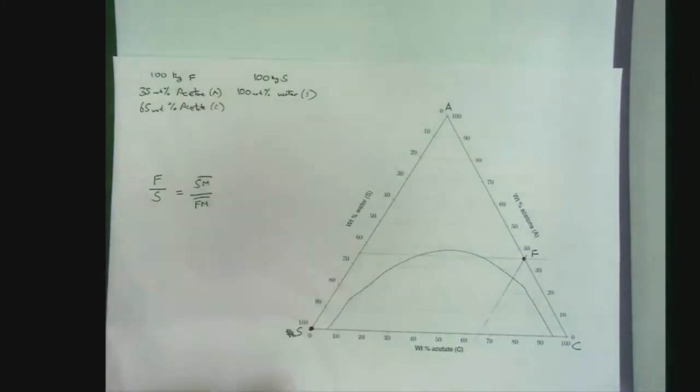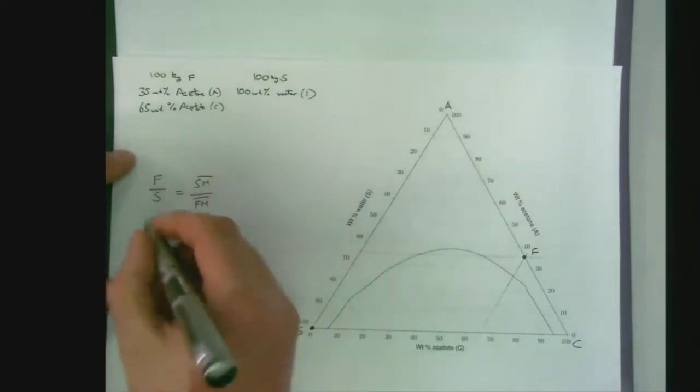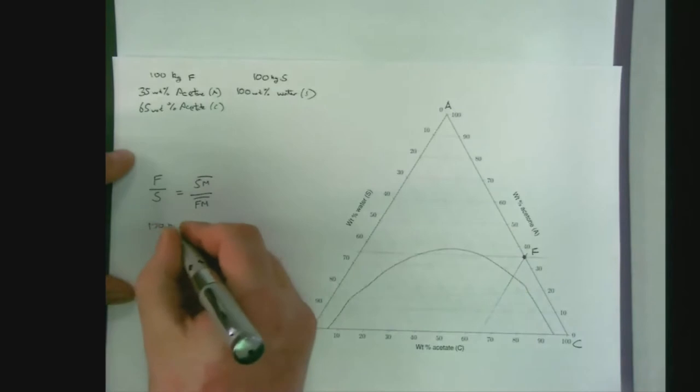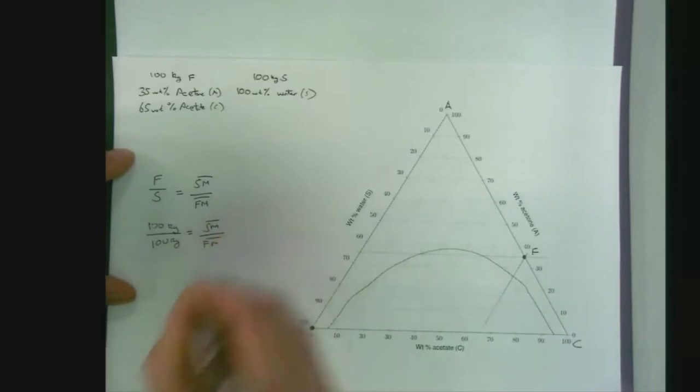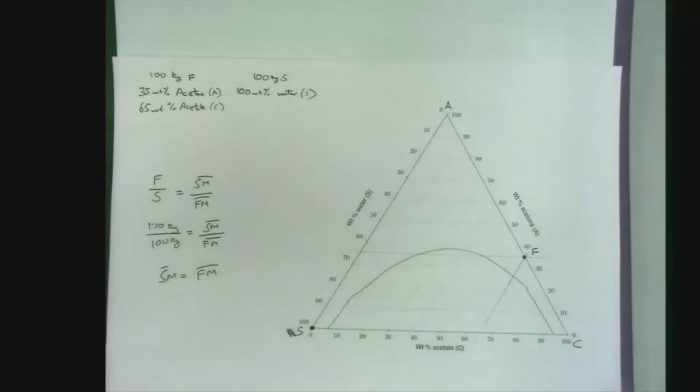If we substitute our numbers in, we'll get 100 kilograms over 100 kilograms equals the ratios of the length of the lines. So we know that the length of those two lines must be the same, or that our mixing point is equidistant between our solvent and our feed points.